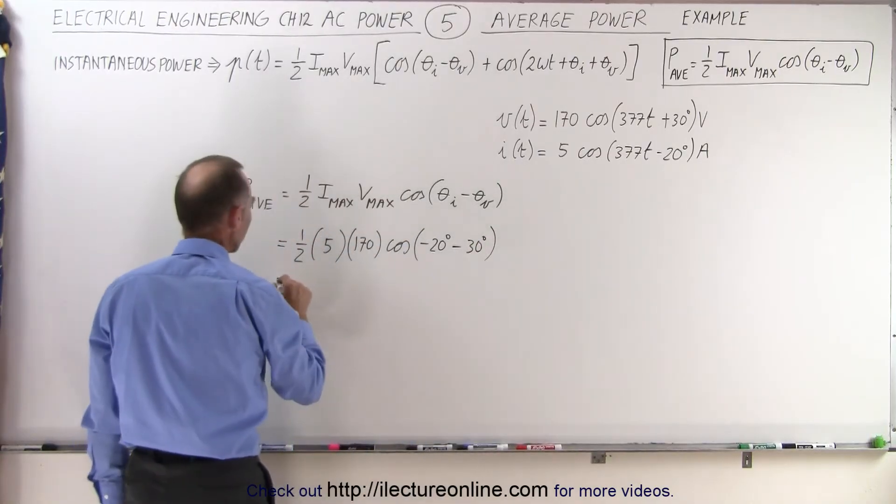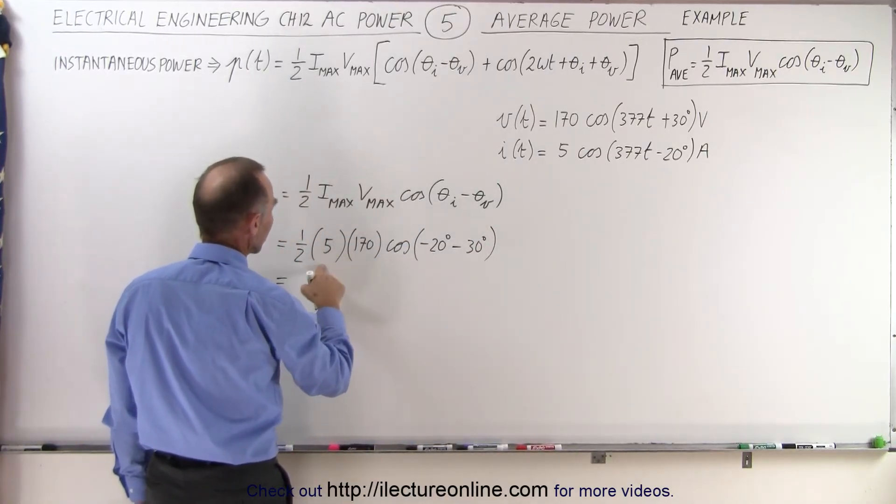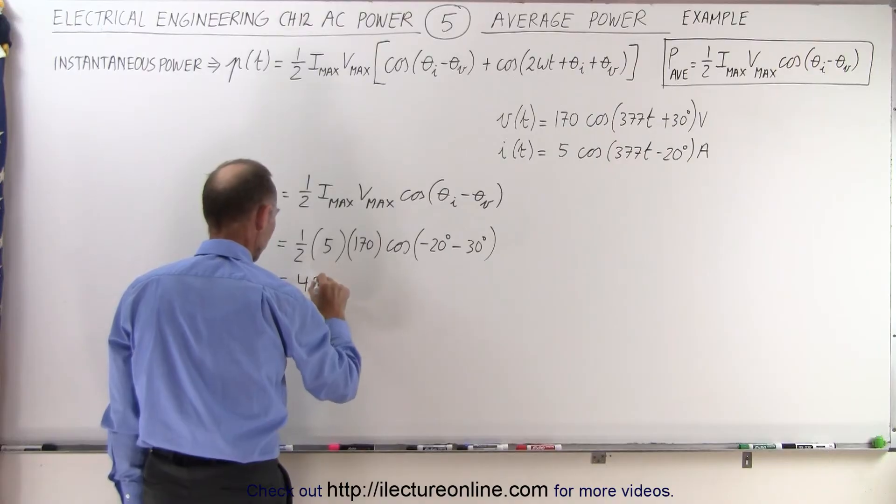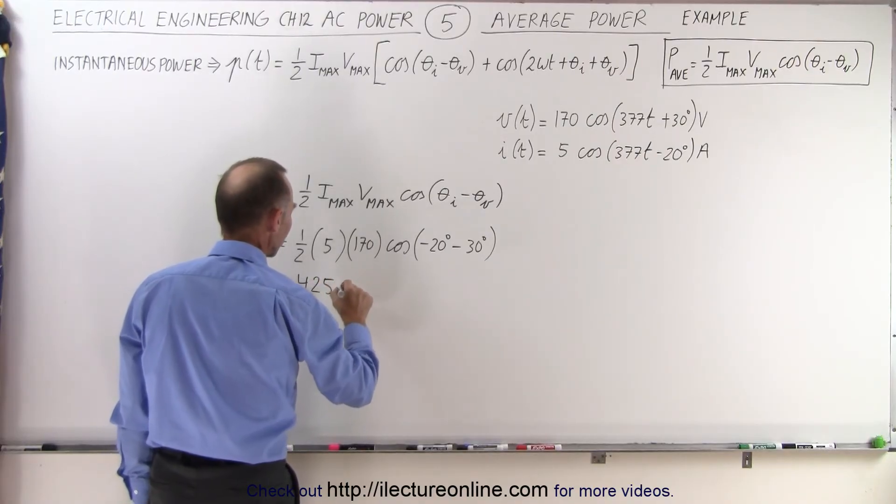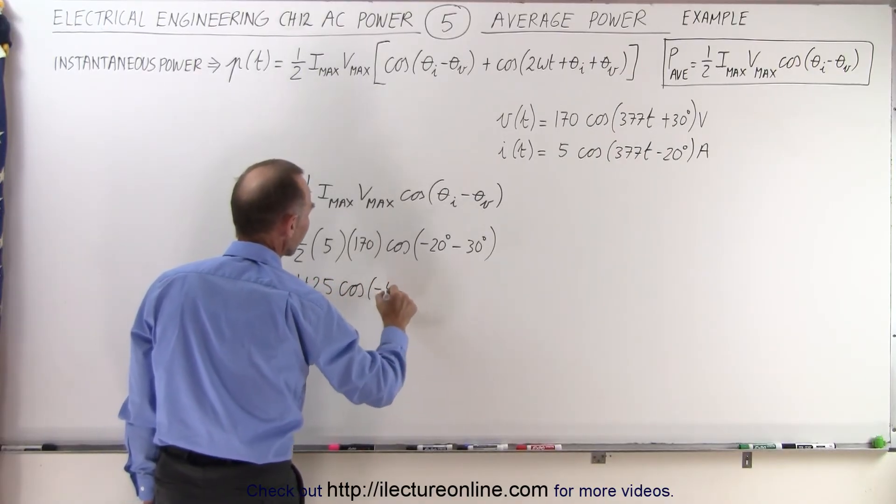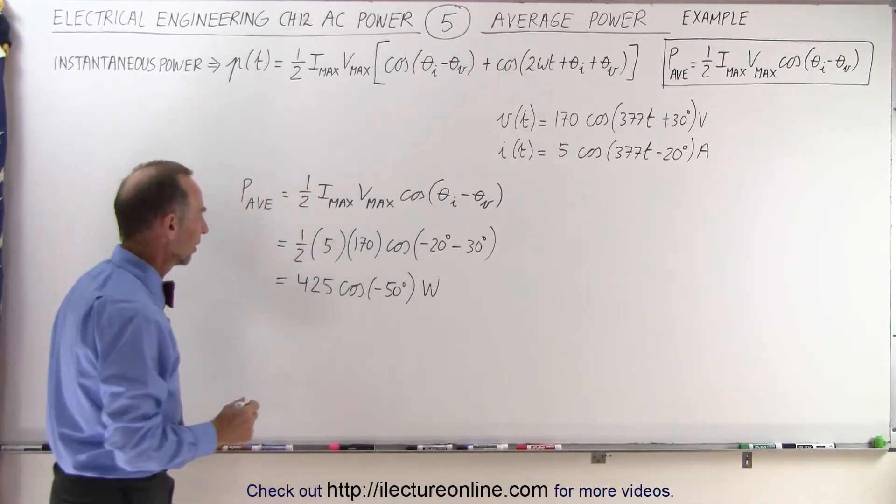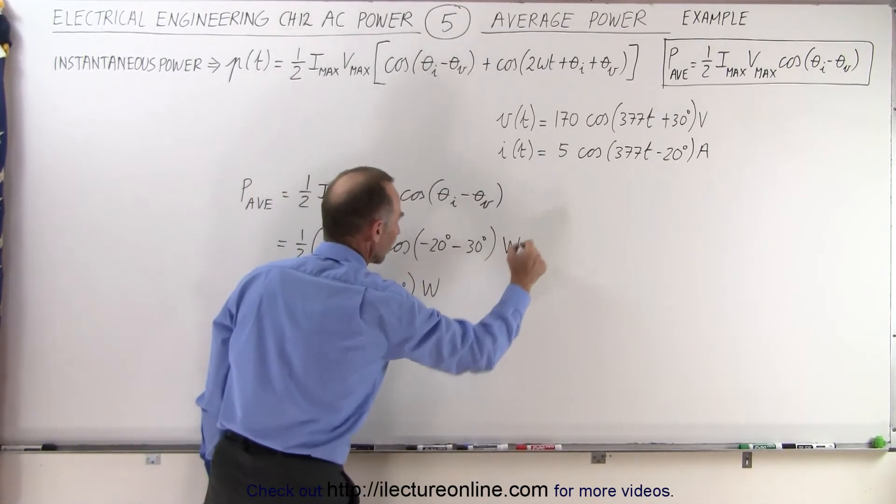And so this is equal to— that would be 170, 85 times 5, that would be 420, 425, yes, that would be 425, 425 times the cosine of minus 50 degrees, and of course the units there would be in watts.